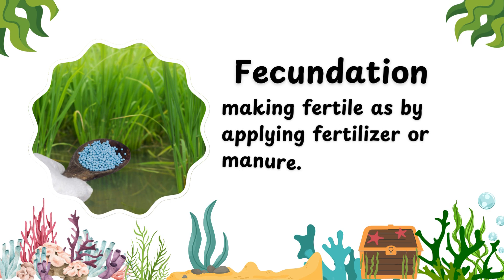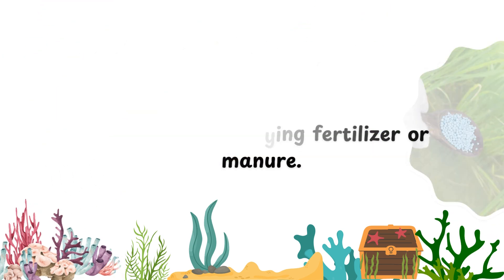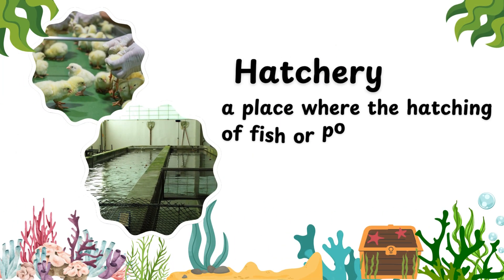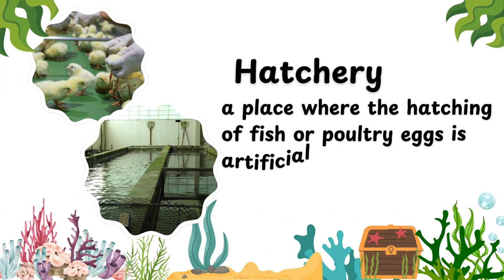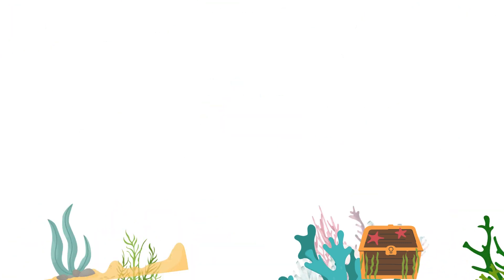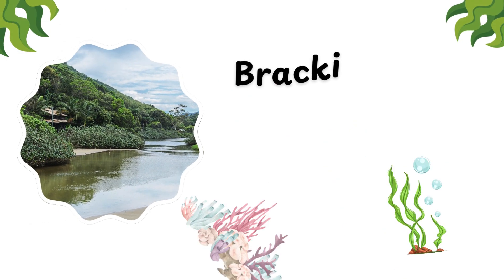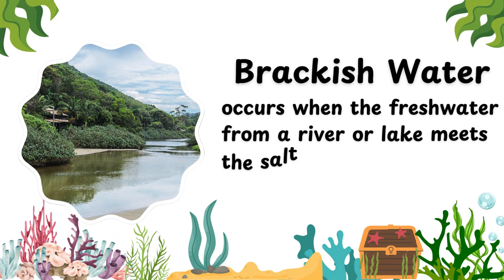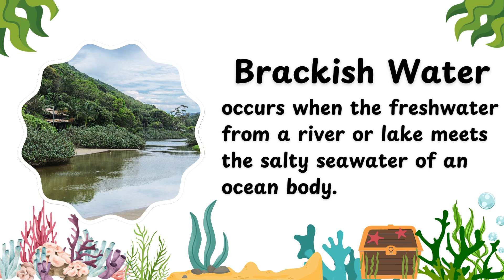A hatchery is a place where the hatching of fish or poultry eggs is artificially controlled for commercial purposes. Brackish water occurs when the freshwater from a river or lake meets the salty seawater of an ocean body.